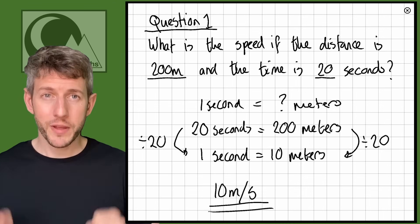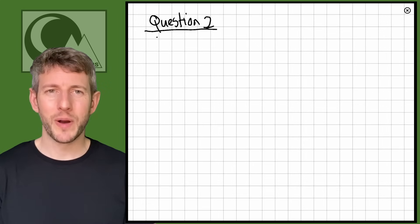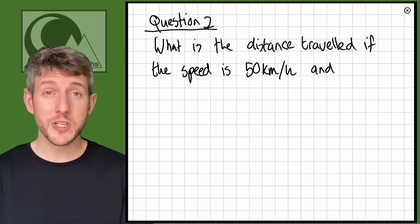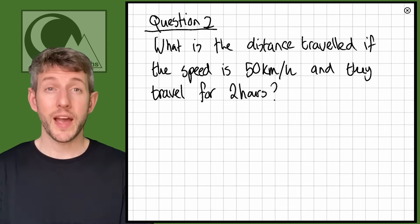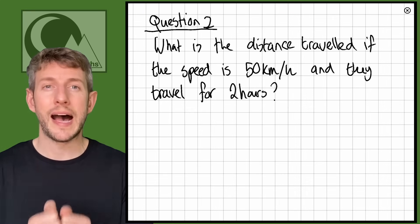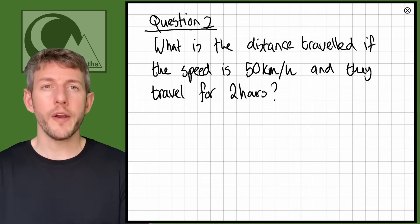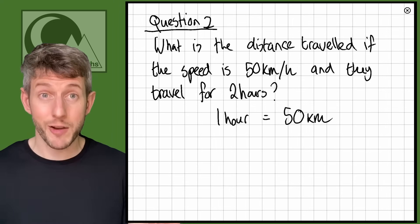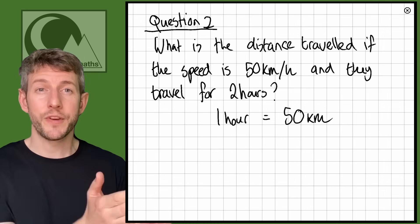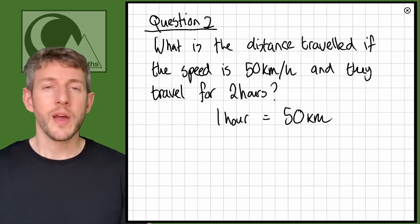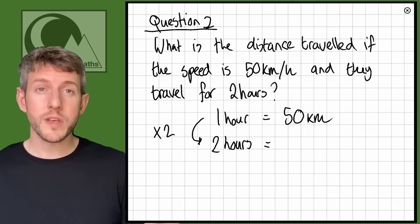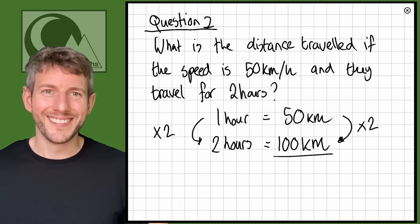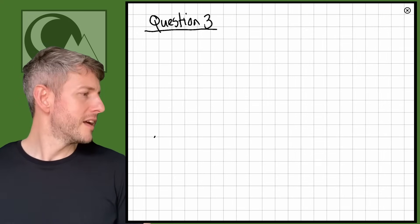Here's another question: what is the distance traveled if the speed is 50 kilometers per hour and they're traveling for two hours? So 50 kilometers per hour means one hour equals 50 kilometers. They're traveling for two hours, so we multiply both sides by 2: one times two equals two hours, and 50 times two equals 100 kilometers. They will have gone 100 kilometers.